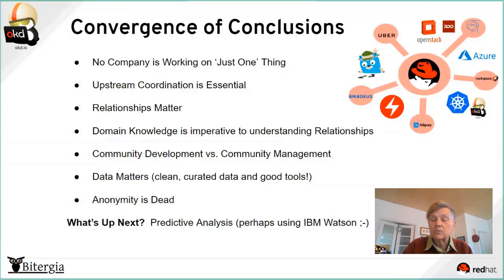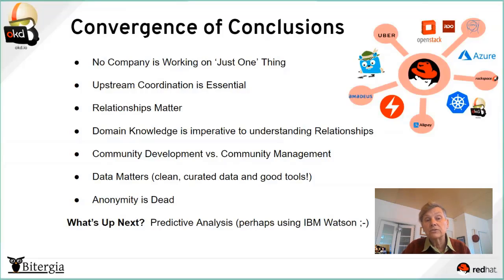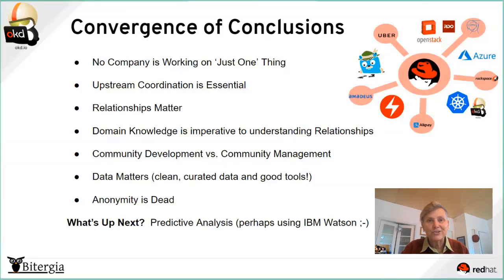In this kind of open source community world, relationships really do matter and nurturing them is important. It was also clear that you need someone with domain knowledge about Kubernetes and cloud native technology to really understand the relationships. For example, someone could have a GitHub repo and be a huge contributor to Kubernetes, but also contribute to some completely unrelated project like a gaming platform. Without domain knowledge, the data is not going to really help you. We also need to start looking at this from a more scientific, data-driven approach — as Daniel always reminds me, data matters. Clean, curated data is really essential, because you can reach the wrong conclusion or promote the wrong person into a leadership position.